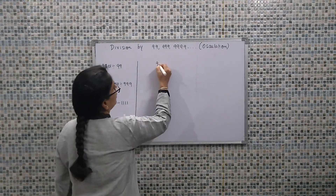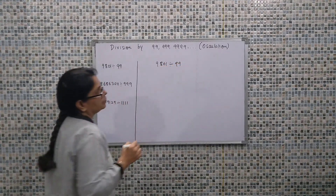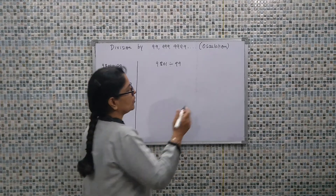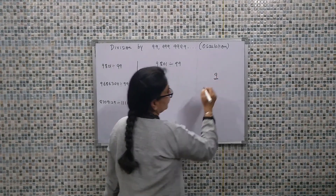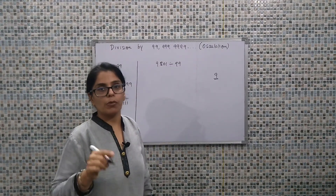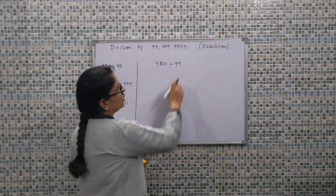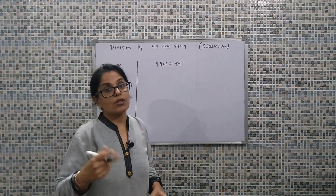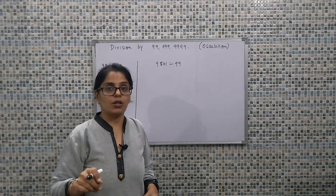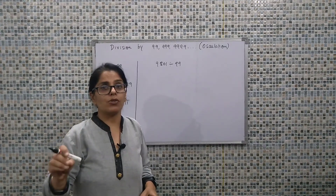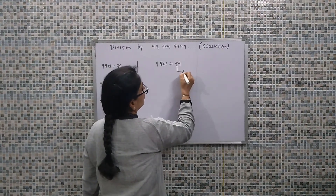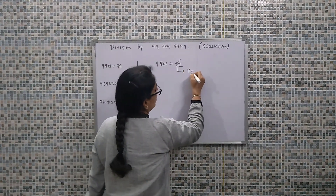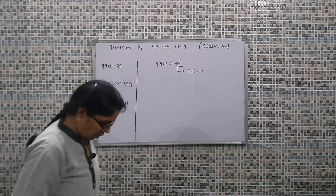So let's start with the first example: we have 9801 divided by 99. First we need to make out whether we use positive or negative osculation. The logic behind positive osculation is that our number should end with 9 — since 99 ends with 9, we will go for positive osculation. Now the next question is: what is the value of the positive osculator? If we consider positive osculator value, we skip the last 9 and use Ekadhiken Purvena on the remaining part, so the positive osculator value is 10.